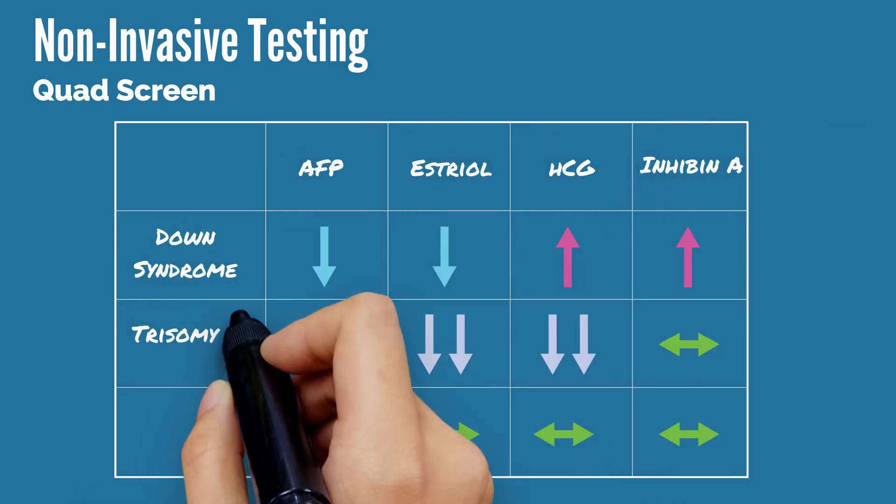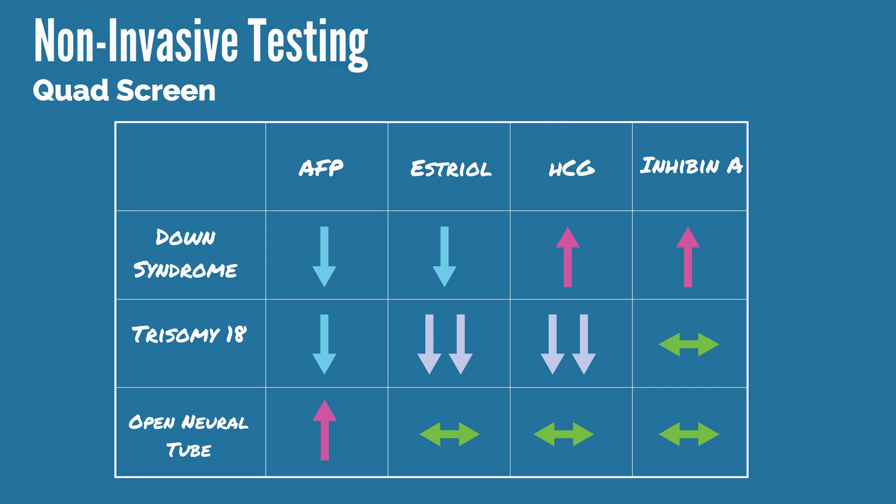The maternal serum quadruple screen is used to give the risk for trisomy 21, 13, and 18, and open neural tube defect. It is a measurement of four maternal serum analytes: HCG; alpha-fetoprotein, which is produced early in gestation by the fetal yolk sac and then later in the liver and gastrointestinal tract; inhibin A; and unconjugated estriol, which is synthesized in very high quantities by the placenta. These four analytes in combination with maternal factors such as age, weight, race, presence of diabetes, and number of fetuses are used to calculate a risk estimate. If a woman has a first trimester screen, she would not necessarily need a full quad screen, as the complete first trimester screen has a higher detection rate than the quad screen alone. She would still be offered a maternal serum AFP to obtain a risk for open neural tube defect.